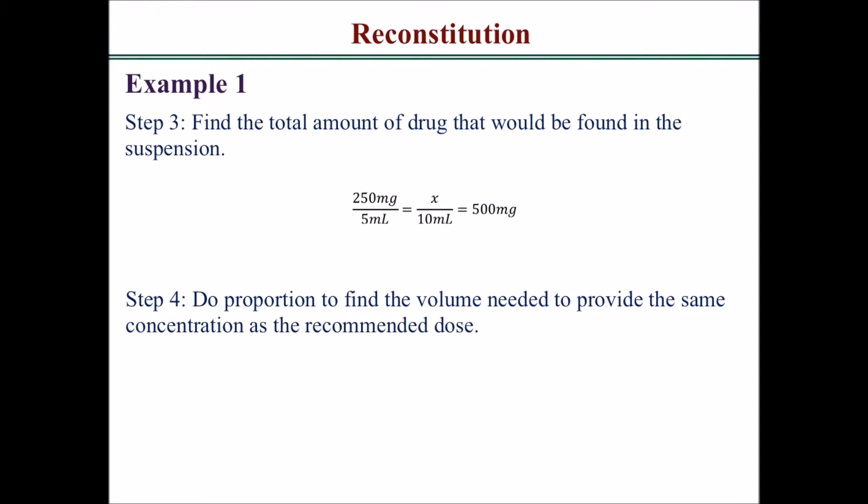Next, use proportions to find the volume needed to provide the same concentration as the recommended dose. We calculated that the concentration is 20 milligrams per 0.75 milliliters. We want the suspension to have that same concentration, so we find that 18.75 milliliters would contain 500 milligrams — that is the new total volume needed.